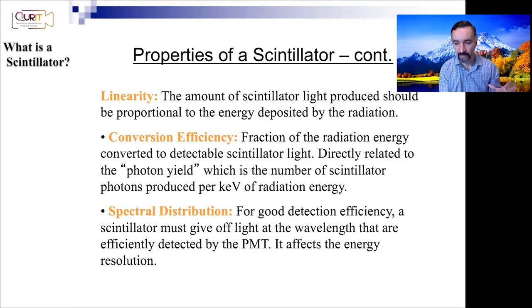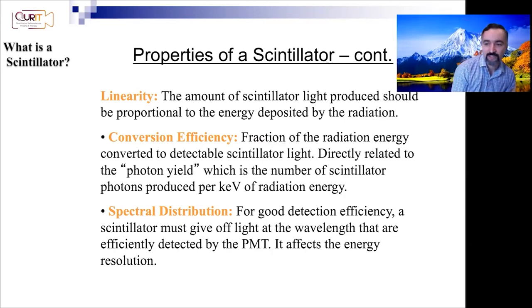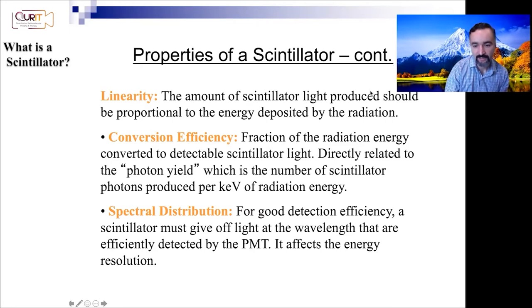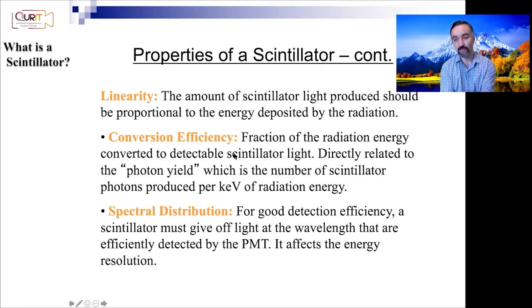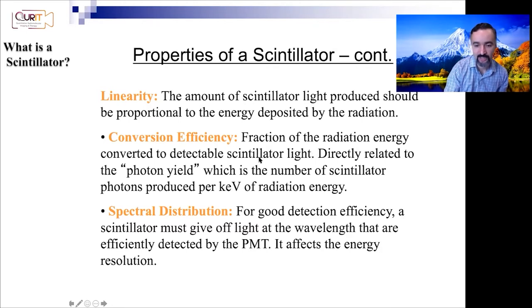You want these scintillators to be fast — to quickly register when an event is arriving — and a smaller decay time means smaller dead time. Linearity is important: the amount of scintillator light produced should be proportional to the energy deposited by the radiation. Conversion efficiency is also very important — the fraction of the radiation energy converted to detectable scintillator light, also referred to as photon yield. The spectral distribution matters too, so that light is emitted at wavelengths effectively detected by PMTs.